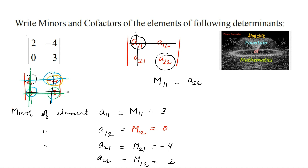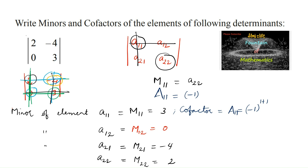So the minors of the elements are 3, 0, -4, and 2. Coming to the cofactors — the cofactor of element aij is defined as capital Aij, which is equal to (-1)^(i+j) multiplied by Mij, where Mij is the corresponding minor.